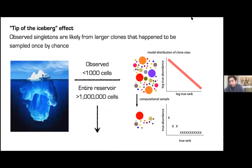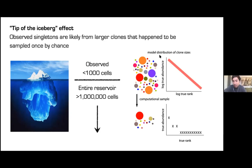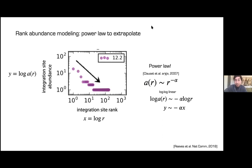We realized that sampling matters enormously. If you only sample a tiny tip of the iceberg of the HIV reservoir, you're still very likely to find singletons by chance. If observations are fewer than a thousand cells but the entire reservoir might be millions or billions of cells, we need a model of the distribution of clone sizes. There may be many different clone sizes with some abundance distribution, but when you sample from that you get a discretized version with tons of apparent singletons.